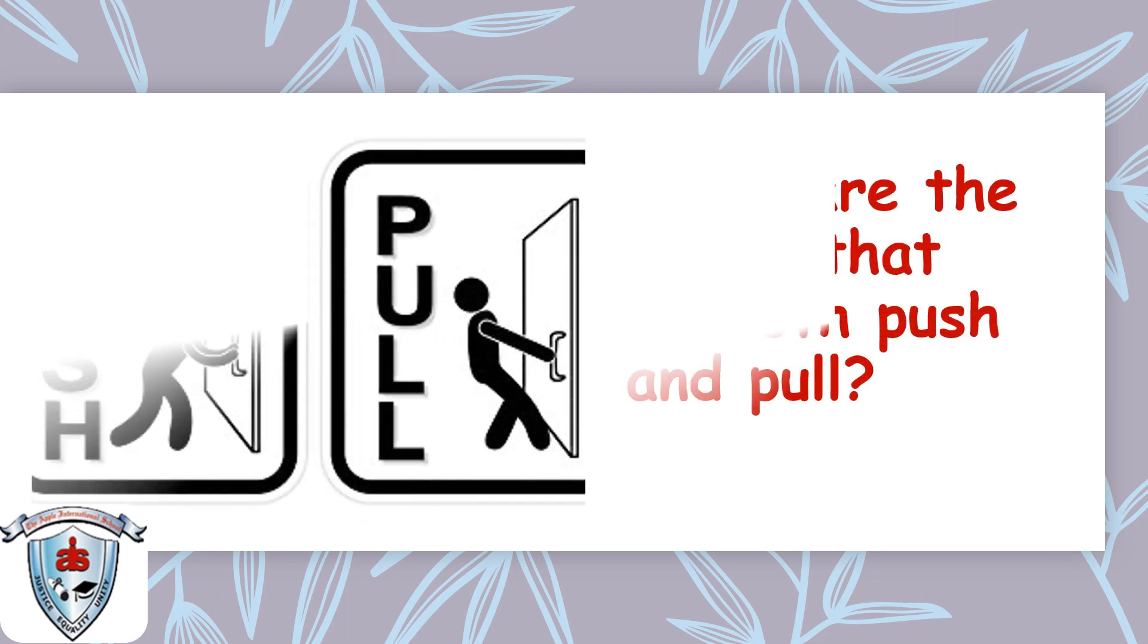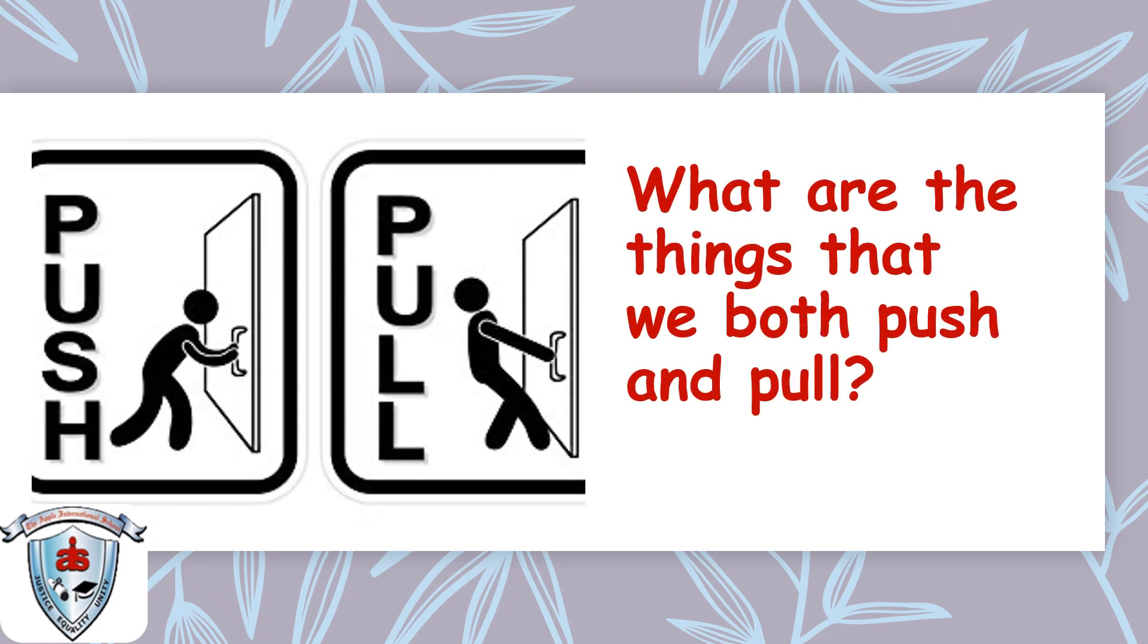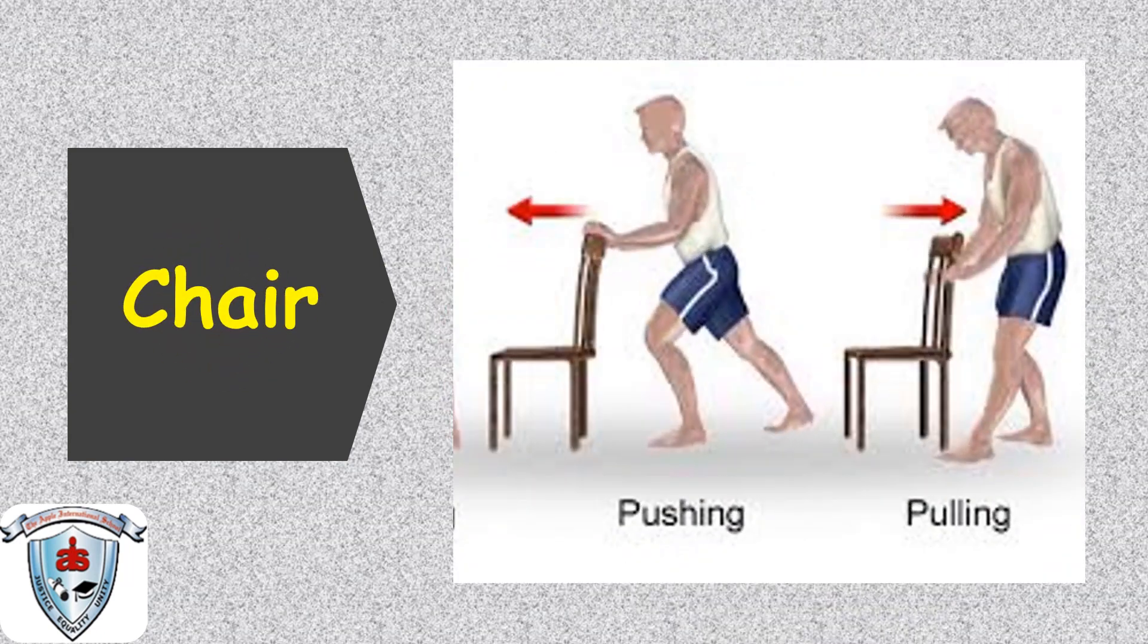Let's see what are the things that we both push and pull. Chair. Look at that man. He is pushing the chair and pulling the chair. In order to sit on the chair, we need to pull it back and sit. And when we get up from the chair, we keep it back. We push it and then keep it under the table.